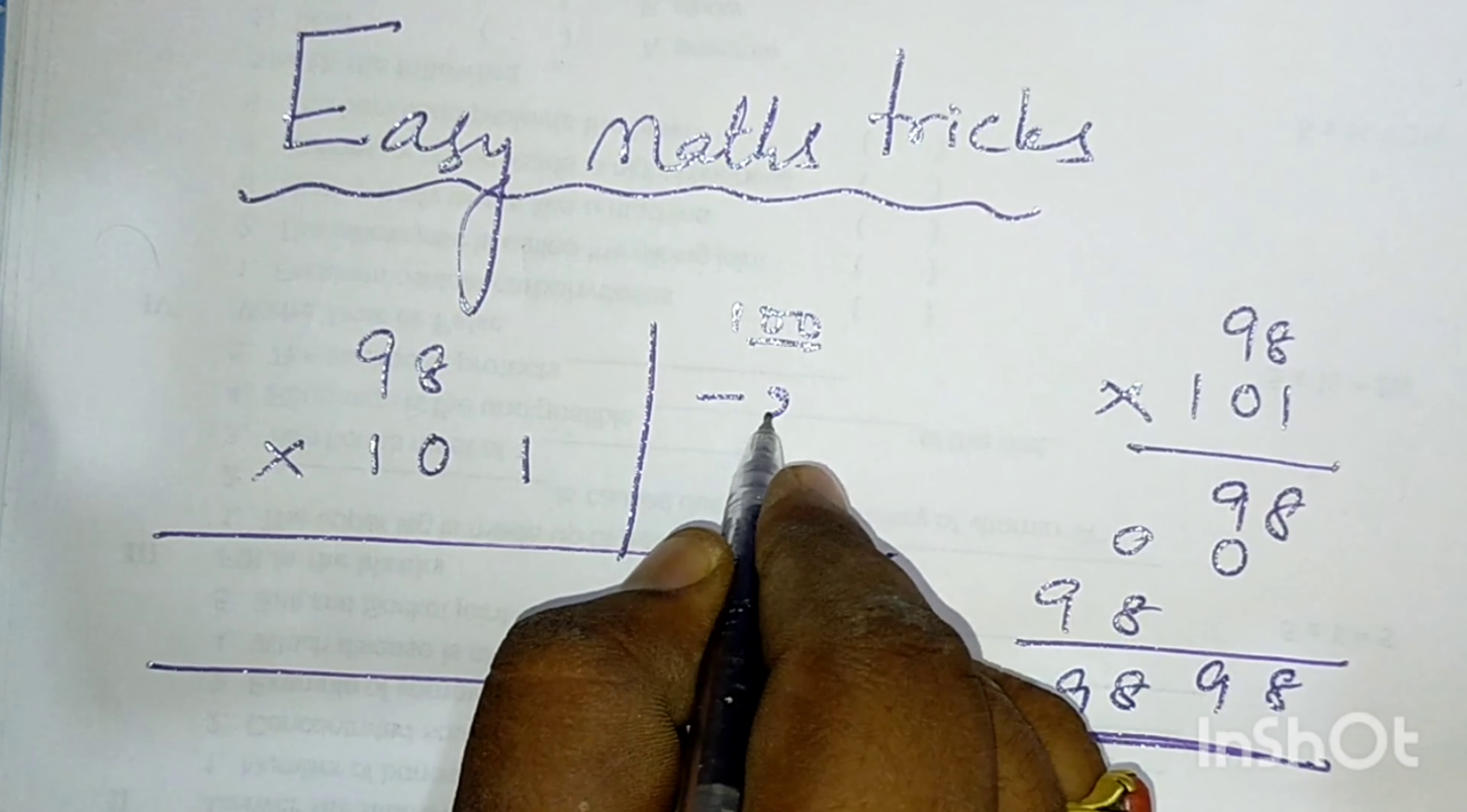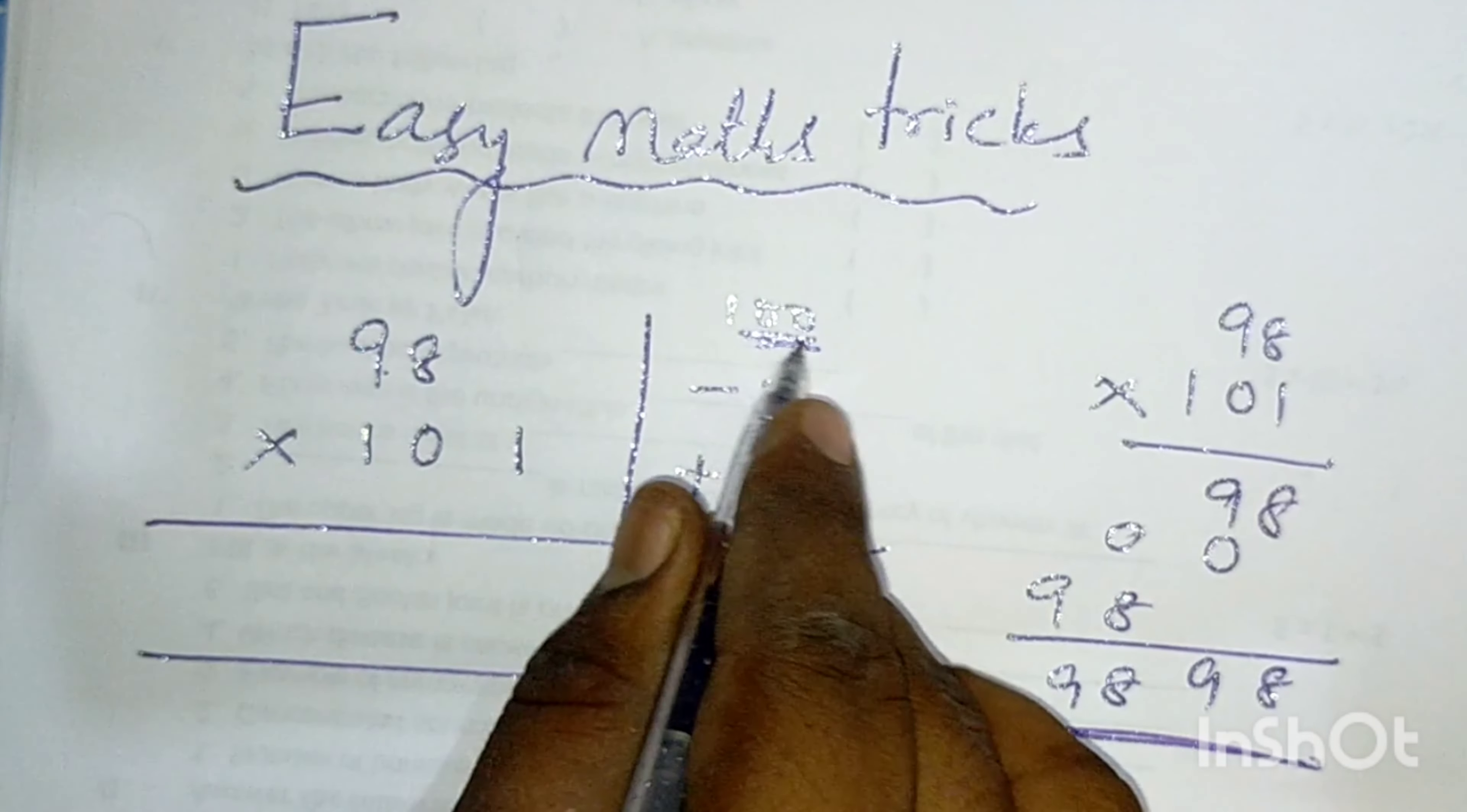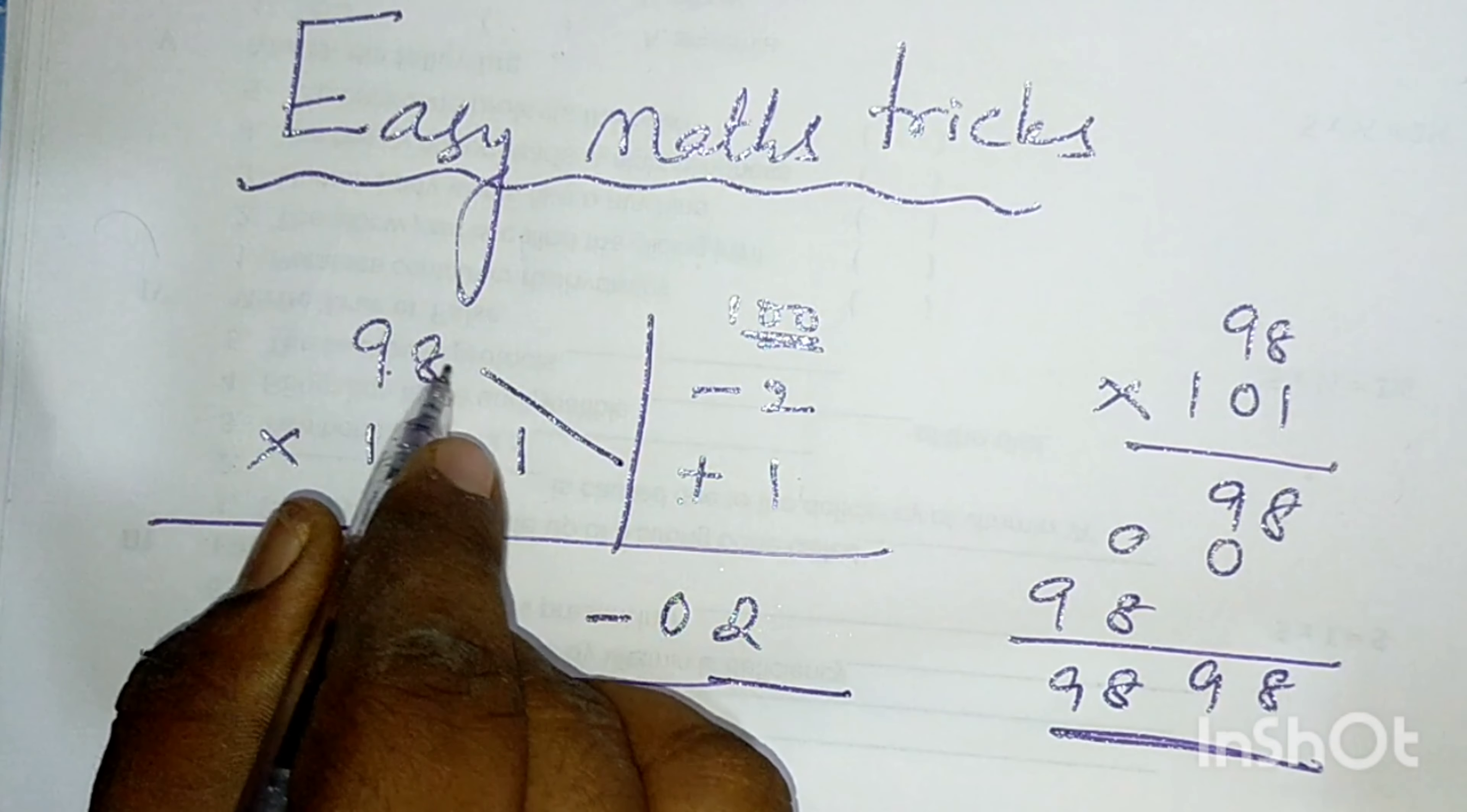100 plus 1 is 101. Two zeros are there, that's why we have to take 02. Plus into minus, minus. In a similar way, 98 plus 1, 98 plus 1 it become 99.